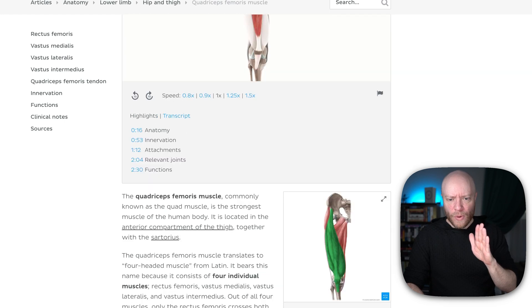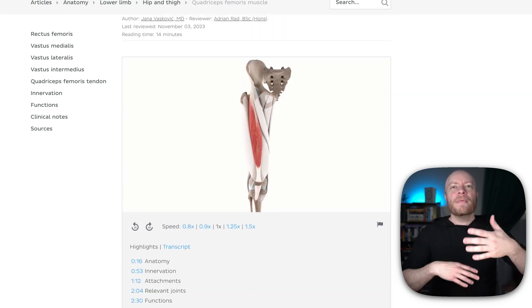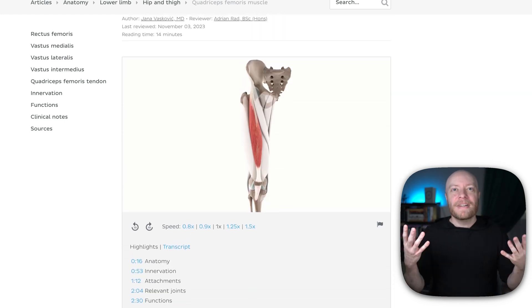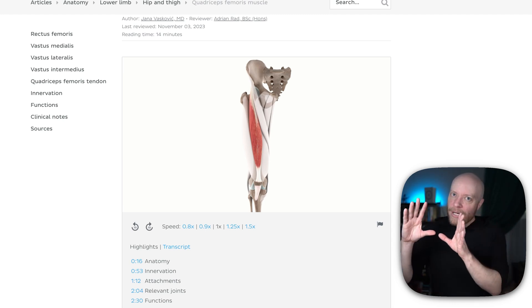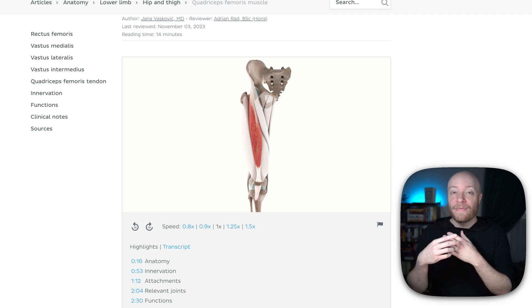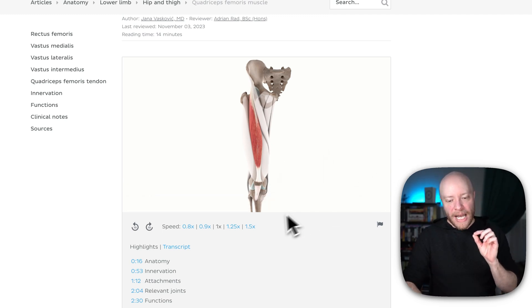But I'm going to scroll all the way up to the top. And what I've done is at the top of our articles, we like to embed videos if we have one that is relevant to what the article is discussing. And now these videos are a premium feature, but I just want to show you the value that comes from these videos because I've gone ahead and skipped to the functions.